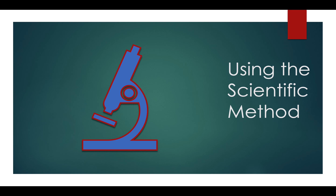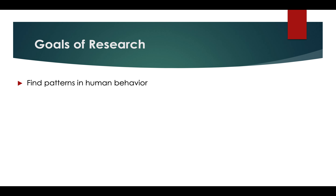Using the scientific method — let's start off by talking about the goals of research. With regard to psychology specifically, one goal of research is to find patterns in human behavior. Based on those patterns, we want to be able to make predictions.